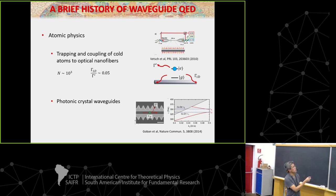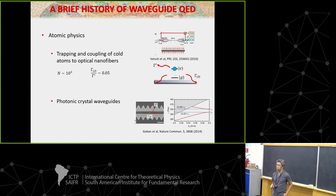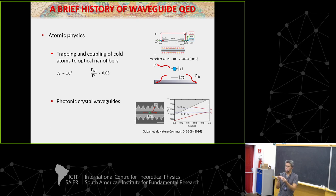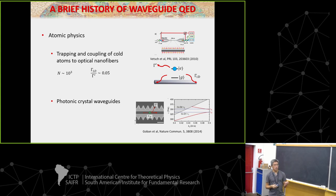People realized that this 5% doesn't seem particularly nice if you want to do highly coherent operations. One of the platforms pursued after the nanofiber is the so-called photonic crystal waveguide. A photonic crystal waveguide more or less starts from a nanofiber — a nanofiber is translation invariant along the direction of propagation — and a photonic crystal is basically a nanofiber or waveguide that's periodically modulated.